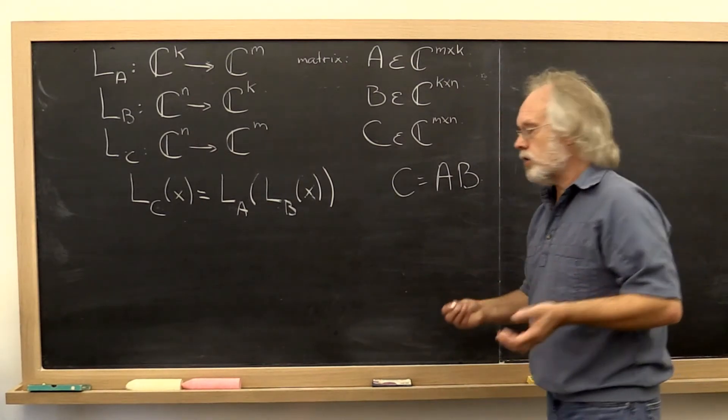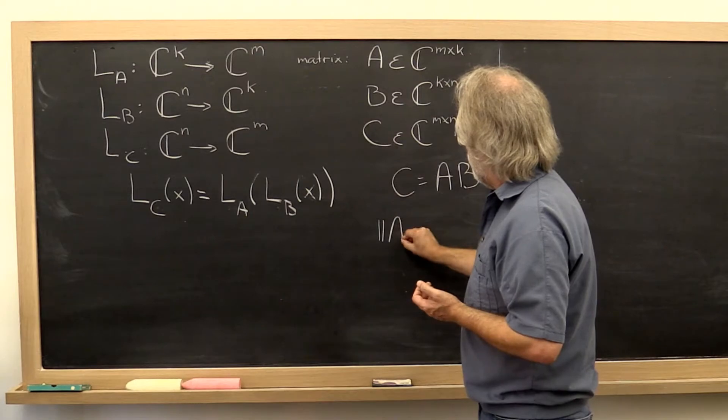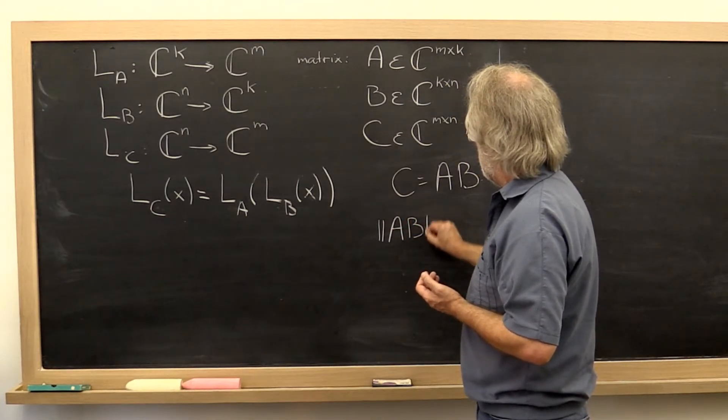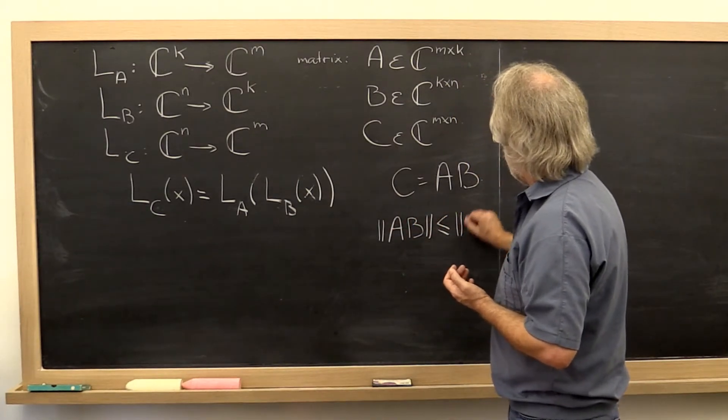We would like our norm to have the property that the norm of A times B is no more than the norm of A times the norm of B.